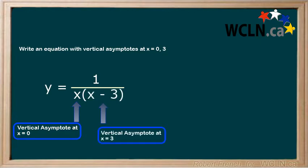There is no limit to the number of vertical asymptotes that we can have. Just add another factor in the denominator for each one.